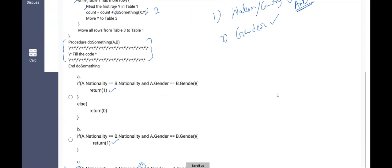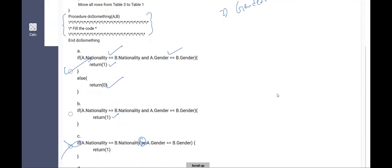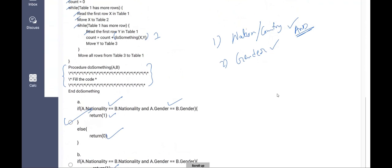Therefore, let us sort out the best of two options. A here the nationality is same, gender is also same, return one. A is the correct answer. Else is return zero. If either of them is false or if both of them are false, then we will be returning a zero, which doesn't take any effect on the value of count. So option A is the correct answer for question number one.